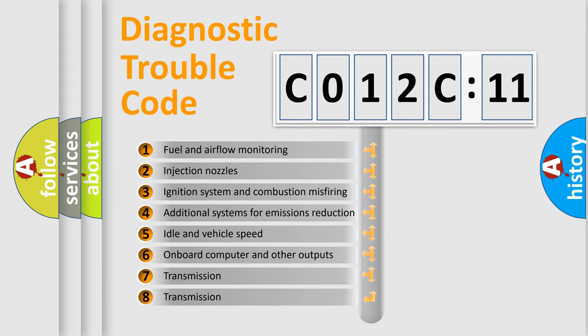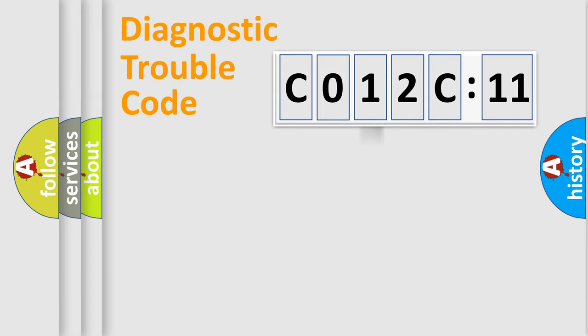The third character specifies a subset of errors. The distribution shown is valid only for the standardized DTC code. Only the last two characters define the specific fault of the group.